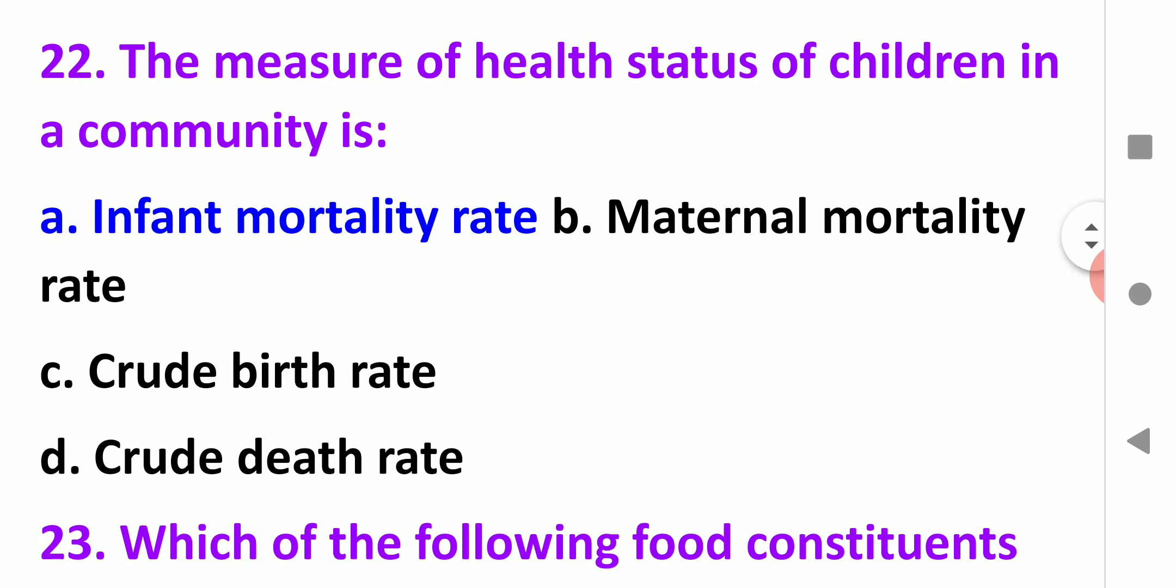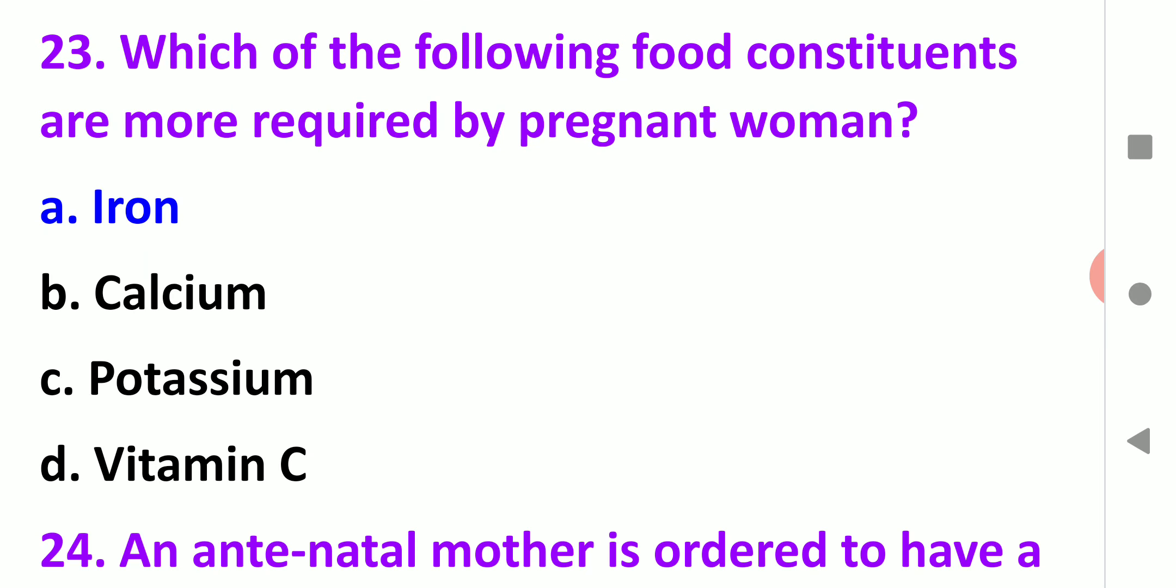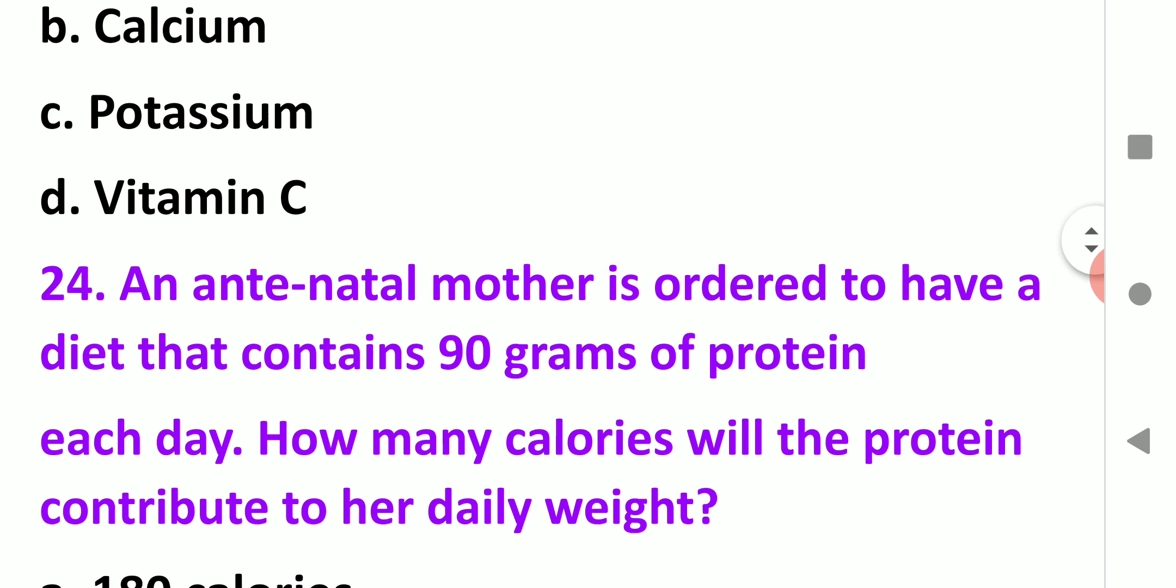The measure of health status of children in the community is on the basis of infant mortality rate. Next, which of the following food constituents are more required by pregnant women? Iron is the most required nutrient, mineral, or constituent in pregnancy.